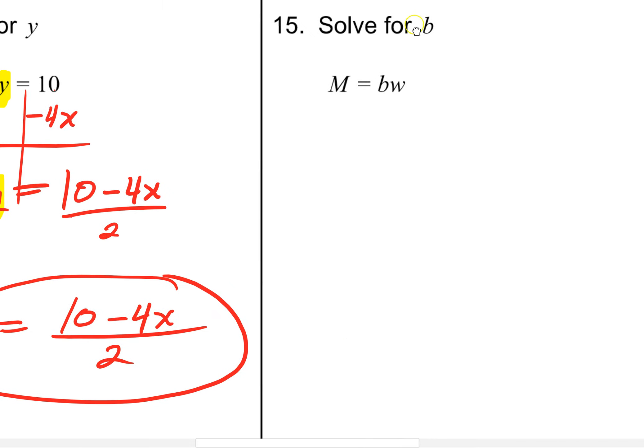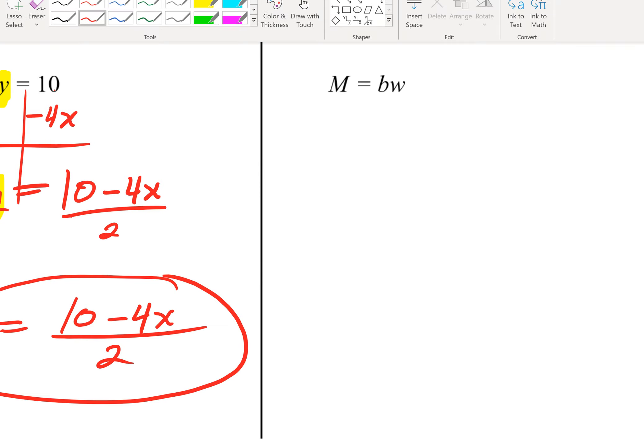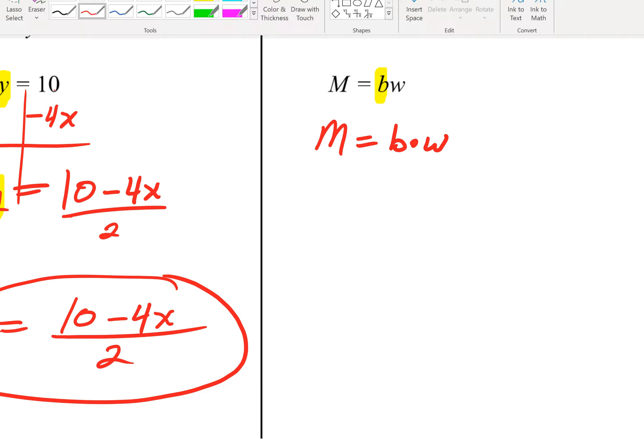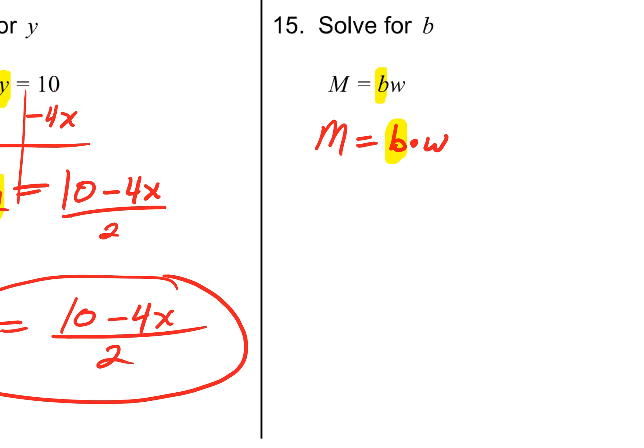Let's take a look at number 15. Solving for b. As we're trying to get b alone, look at that right side. b is actually being multiplied to w. That's because b is right next to w. Anytime a number and a variable or two variables are right next to each other, the math involved is multiplication. They rarely will show that multiplication dot there, but it's there. So, to get b alone, I have to get rid of that multiplication of w. What is the opposite of multiplying by w? Dividing by w. Your final answer is just m all over w.